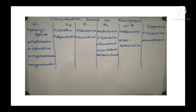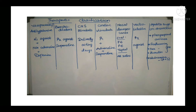Next is the classification based on receptors: alpha 1, alpha 2, beta 1, beta 2, drugs acting on both alpha and beta, and finally dopamine receptors. Drugs acting on alpha 1 receptors are phenylephrine, methoxamine, ephedrine, mephentermine, and oxymetazoline. For this classification we simply need to remember all drugs with their respective receptor.